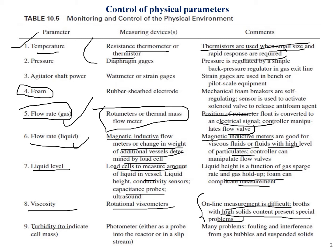The ninth parameter is turbidity, which is very important when studying bioreactors. Turbidity is measured with the help of a photometer. There are many problems with using photometers, which include fouling and interference from gas bubbles and suspended solids.